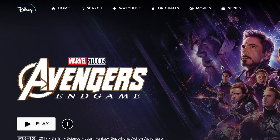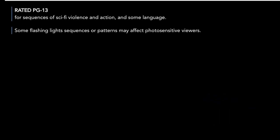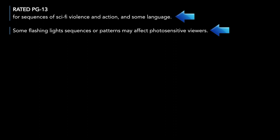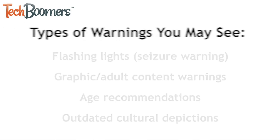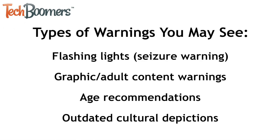When you're settled in and ready to watch something, click the play button on the details page to start streaming. When you start streaming content on Disney Plus, you may notice a warning or disclaimer in the top left corner. These warnings can include flashing lights, adult content, age recommendations, and also outdated cultural depictions. Look out for these warnings when streaming and keep them in mind while you're watching, especially if you have your children watching along with you.